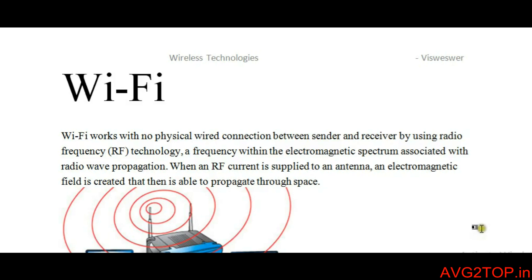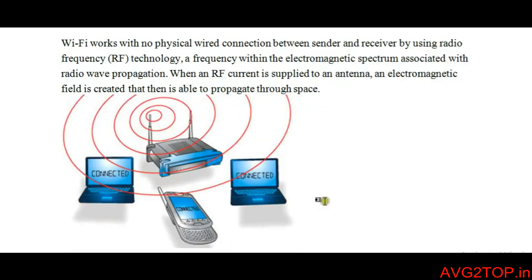The signal propagates through an antenna and an electromagnetic field is created through the space. Here in this diagram you can see there is an antenna and an electromagnetic field around it to connect various devices.